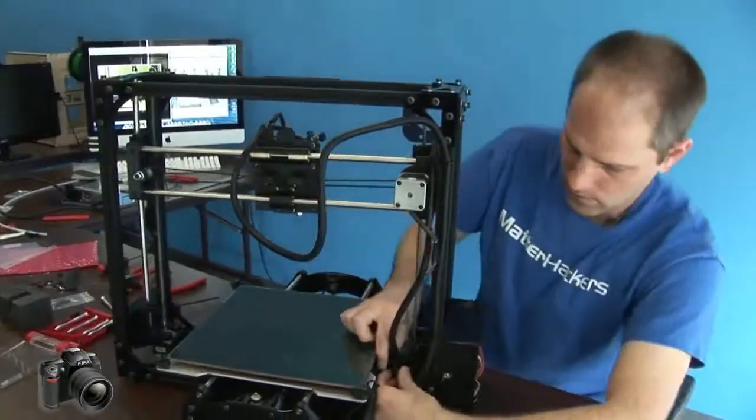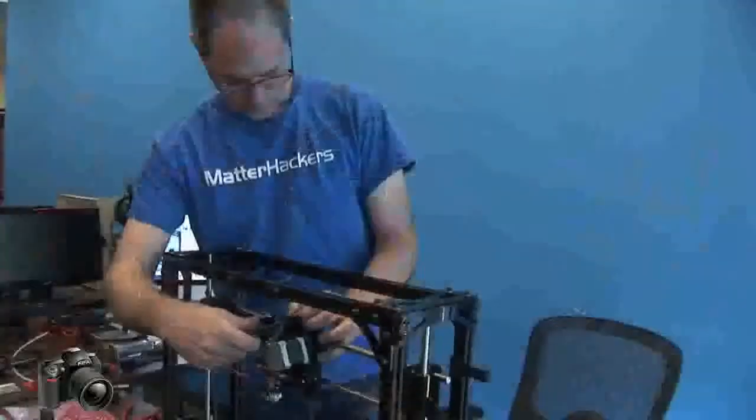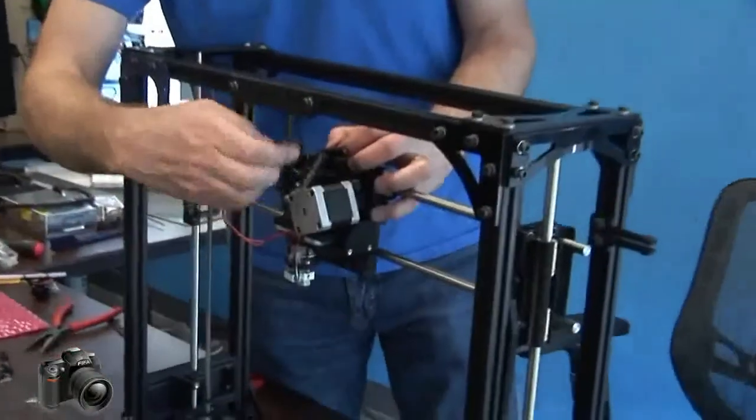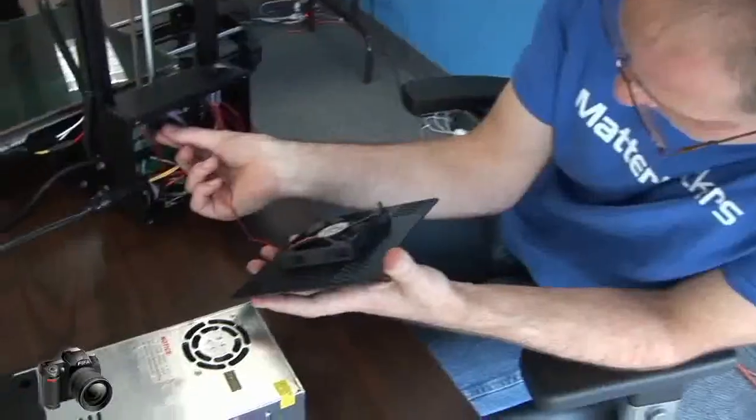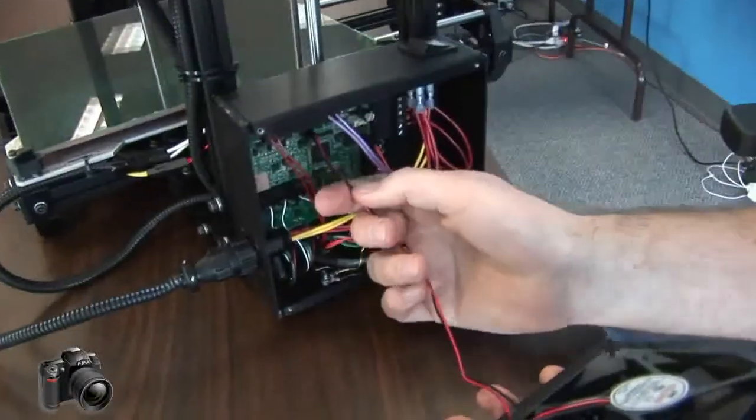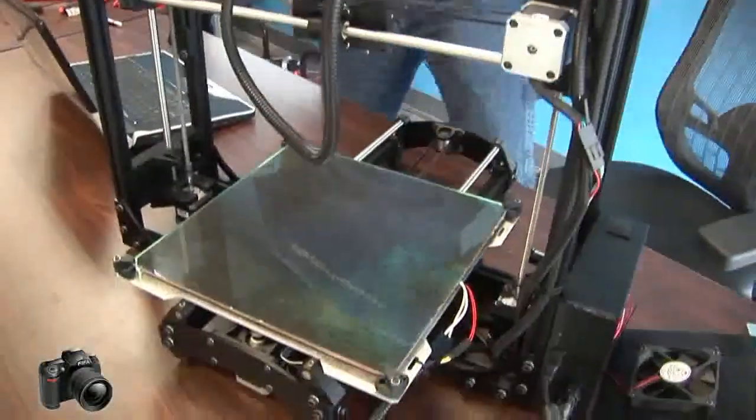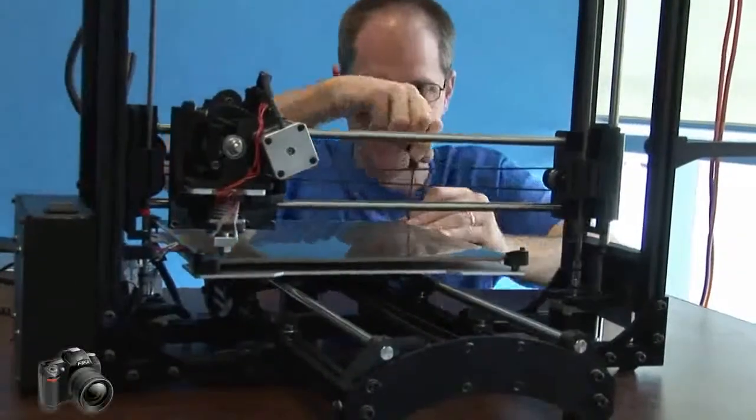LulzBot makes a number of printers, they've been helping innovate and they do a lot of stuff with open source. And the latest printer is the TAZ-3, and what we're building is the kit TAZ. So it's a TAZ-3, it's the same printer except it's new and it's in kit form, so it's quite a bit cheaper.